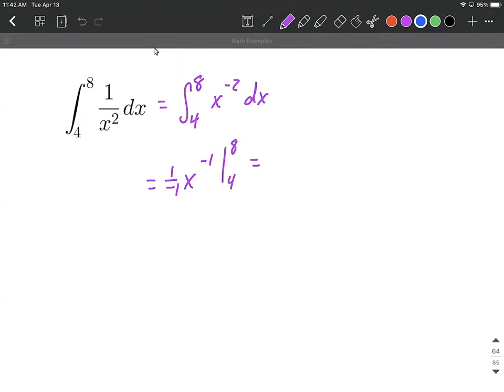Now let's rewrite this instead of 1 divided by negative 1. Let's just make that a negative out in front. Instead of having that negative exponent, let's move that back down to the denominator and make it a positive exponent. So negative 1 over x is going to be evaluated between 4 and 8.